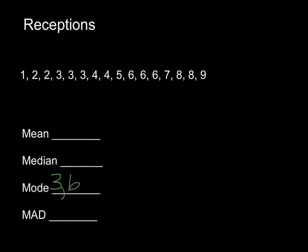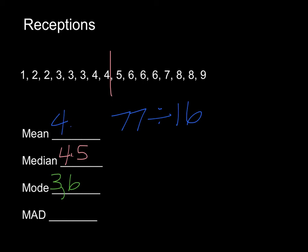Now let's find the median. We have 16 data points, so we need the value between the 8th and 9th positions. Counting to position 8, our median falls right between the 4 and the 5, so the median is 4.5. Next, let's find the mean. Adding everything up gives us 77, divided by 16, which rounds to the nearest tenth as 4.8. So mean, median, and mode — those are easy, we're used to those.